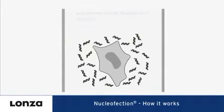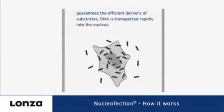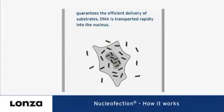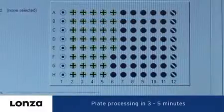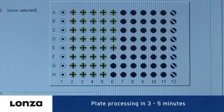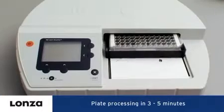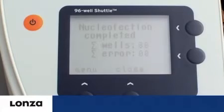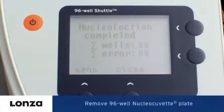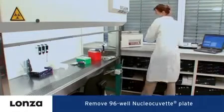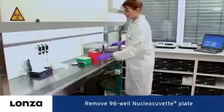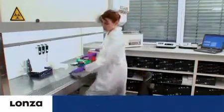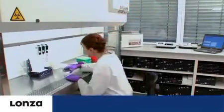The nucleofection process transfers the substrate into the cytosol and the nucleus of the cells, enabling the transfection of resting and non-dividing cells. Progress and transfection results are shown on the shuttle display and filed in the 96-well shuttle software. When the last well has been processed, the retainer opens automatically and the 96-well nucleo-cavette plate can be removed.